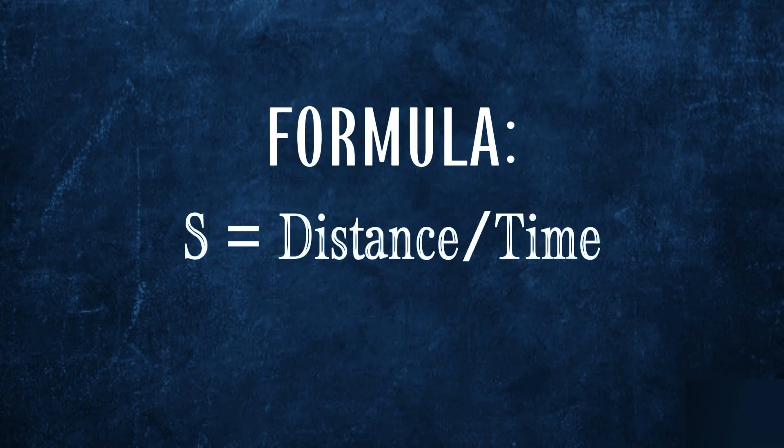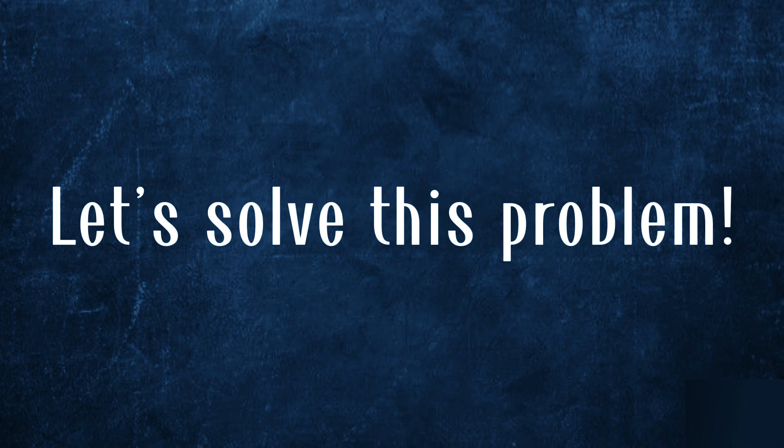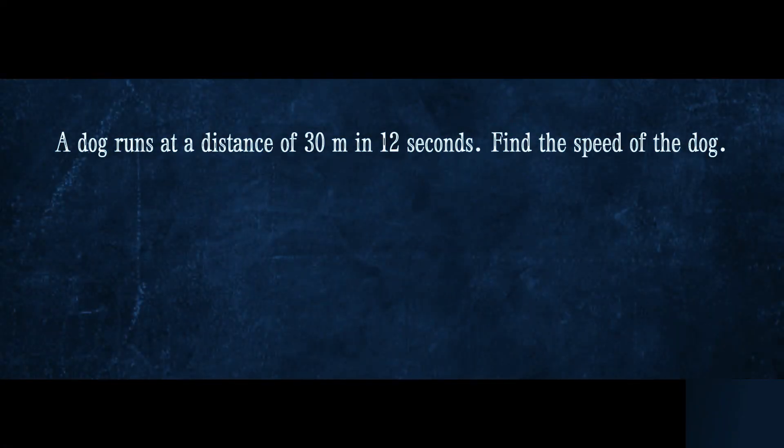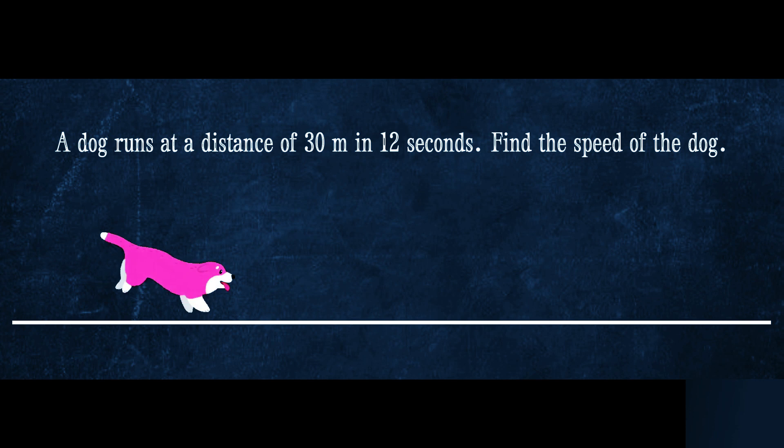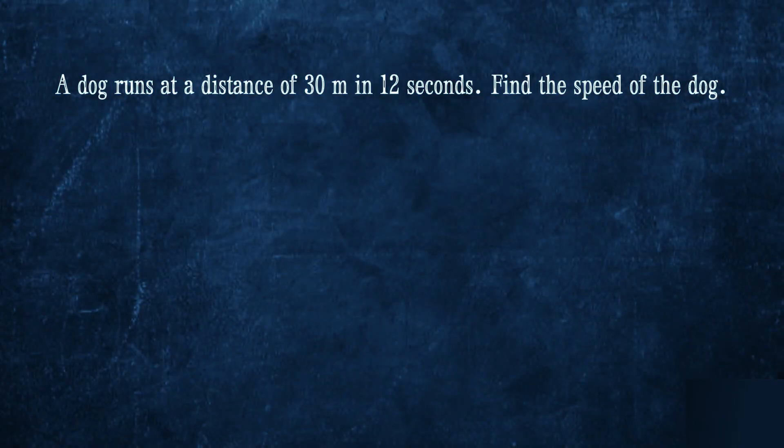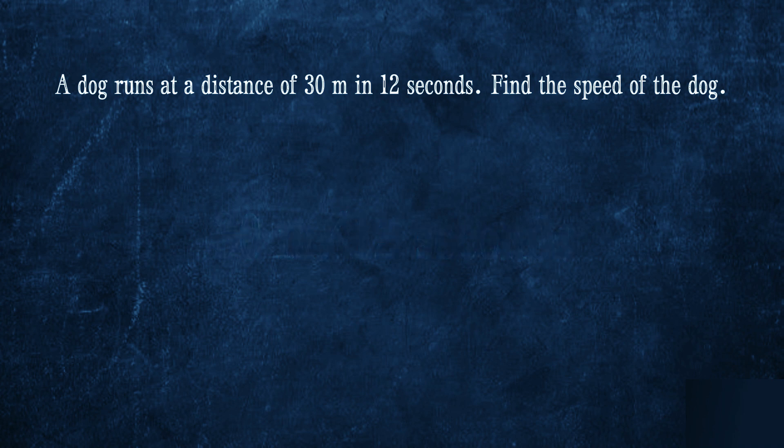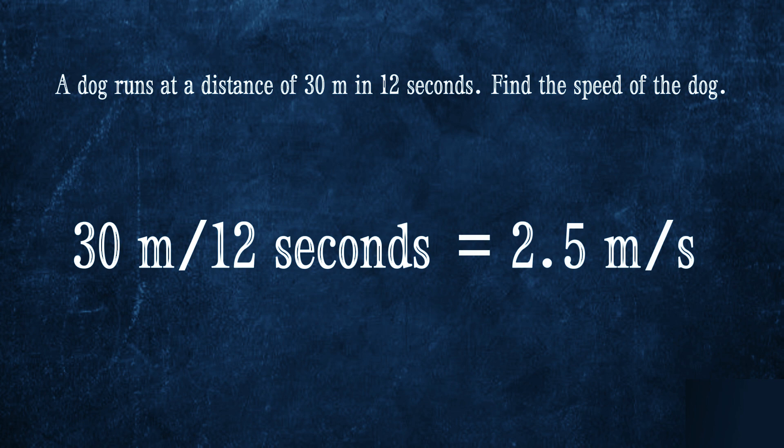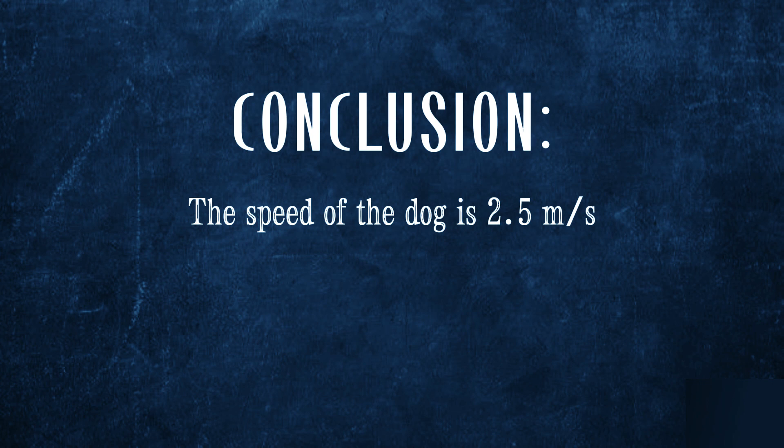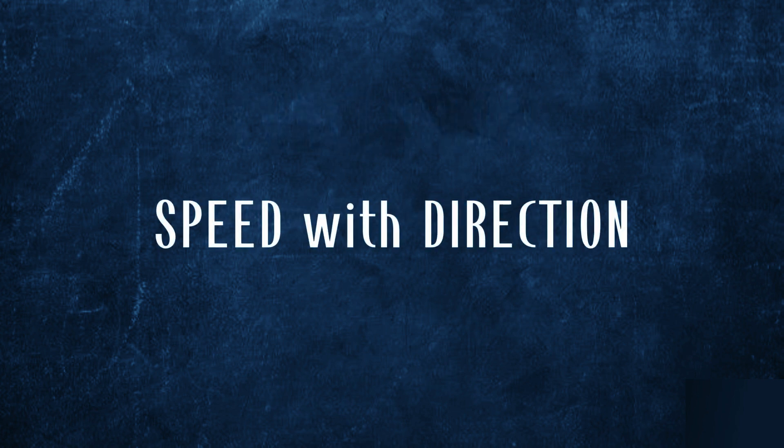Using the provided formula earlier, let us solve this problem. A dog runs at a distance of 30 meters in 12 seconds. Find the speed of the dog. To get the answer, you must divide 30 meters by 12 seconds. 30 meters over 12 seconds is equal to 2.5 meters per second. Therefore, the dog traveled at the speed of 2.5 meters per second, also known as the speed with direction.